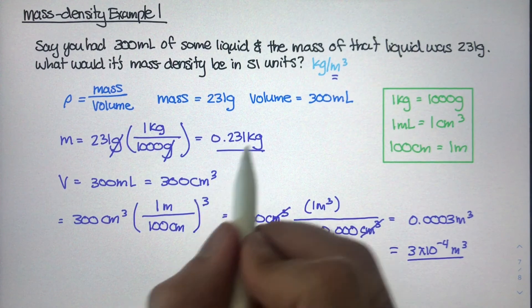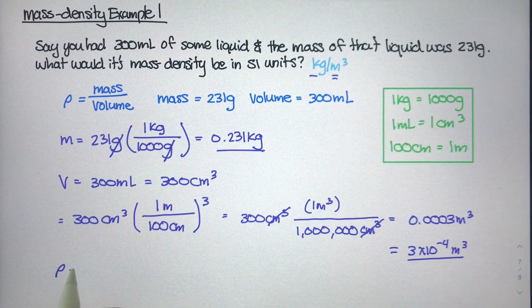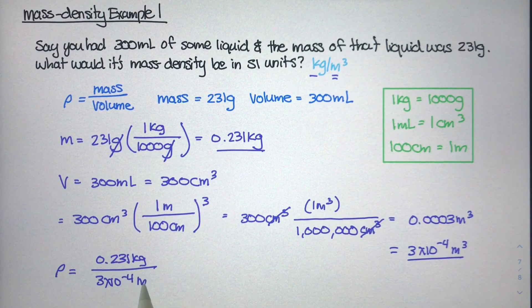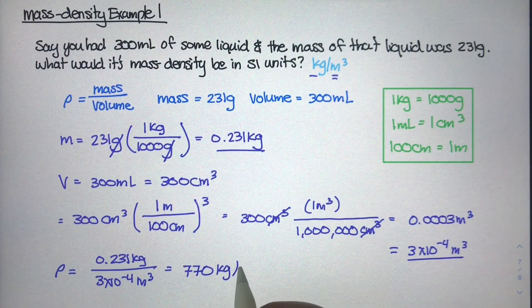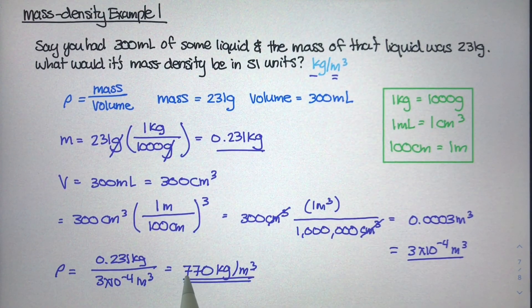Great, we have mass in kilograms, which is good. We have volume in meters cubed, which is good. And now simply the density, the mass density of this unknown liquid, is simply the mass divided by the volume. So mass is 0.231 kilograms divided by 3 times 10 to the negative fourth meters cubed. If we do this calculation on a calculator, we'll get that the mass density is 770 kilograms per meter cubed. There's our answer. This unknown liquid has a mass of 770 kilograms for every one unit or one meter cubed of volume.